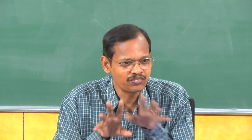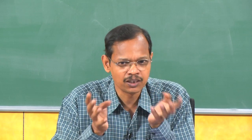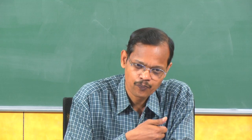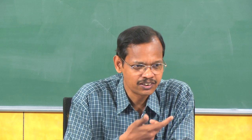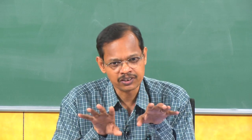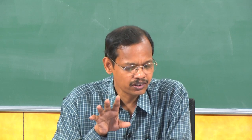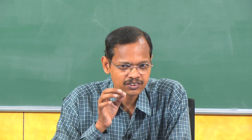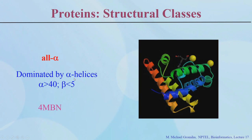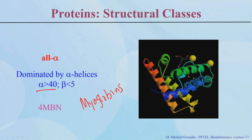Protein structures are classified into 4 different classes depending upon the secondary structures present. The major secondary structures are alpha helices and beta strands. The first class is all-alpha proteins, which contain mainly alpha helices - more than 40 percent alpha helices and less beta strands. Myoglobin is an example: it contains alpha helices with no beta strand.